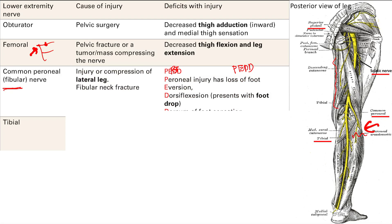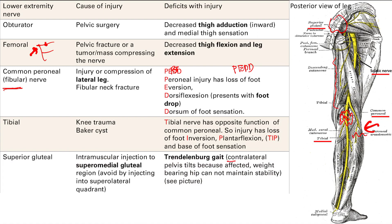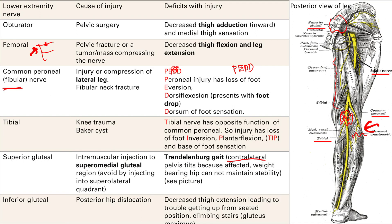The tibial nerve is at the back of the knee — injured by knee trauma or a Baker's cyst. Its function is completely opposite to PEDD: you lose foot inversion, plantarflexion, and base of the foot sensation. The superior gluteal nerve is damaged by injection into the superior medial buttock — prevent this by injecting into the superior lateral side. Injury causes Trendelenburg gait with contralateral pelvic tilt. Finally, the inferior gluteal nerve is injured by posterior hip dislocation, causing loss of thigh extension — trouble getting up from a seated position.